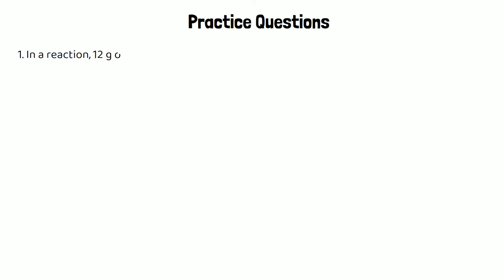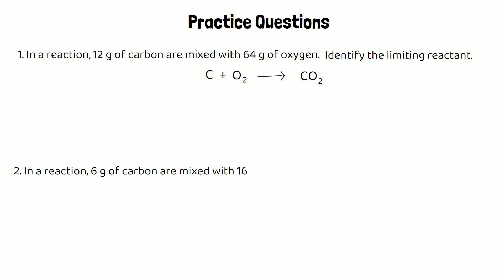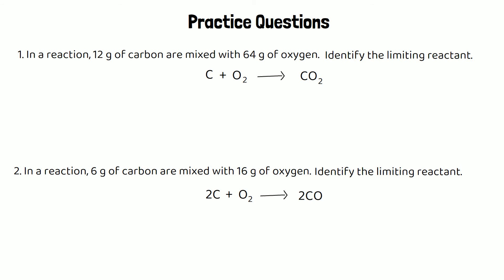Here are two practice questions. Question one: 12 grams of carbon are mixed with 64 grams of oxygen — identify the limiting reactant. The equation is C + O₂ → CO₂, a one-to-one mole ratio. Question two: six grams of carbon mixed with 16 grams of oxygen — the equation is 2C + O₂ → 2CO, a two-to-one mole ratio. Use moles = mass ÷ Mr (or Ar). Pause and have a go.